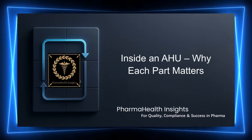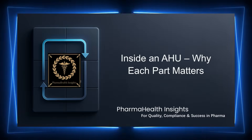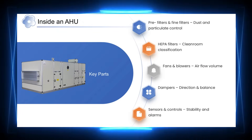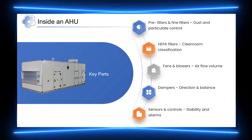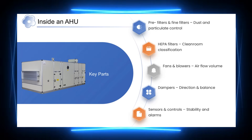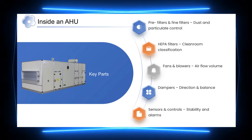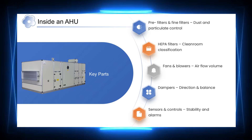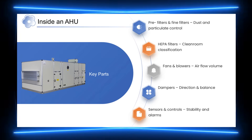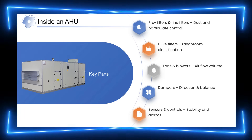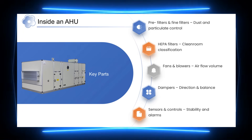To understand this importance, let's look inside an AHU. Inside an AHU, each component has a specific role in maintaining GMP control. Pre-filters and fine filters remove larger particulates and protect downstream components, while HEPA filters ensure the required clean room classification is achieved. Fans and blowers maintain the necessary airflow volume, and dampers help control airflow direction and pressure balance between areas. Sensors and control instruments continuously monitor system performance and provide alarms when conditions move out of limits. Together, these components ensure that air quality remains controlled, consistent, and compliant.